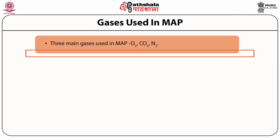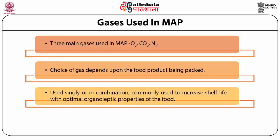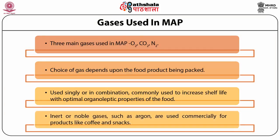The three main gases used in MAP are oxygen, carbon dioxide, and nitrogen. The choice of gas depends on the food product being packed. Used singly or in combination, these gases are commonly used to increase shelf life with optimal organoleptic properties of food. Inert or noble gases such as argon are also used commercially for products like coffee and snacks.